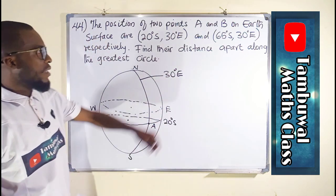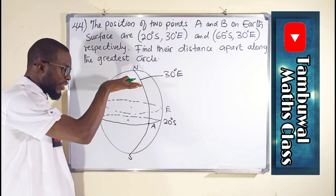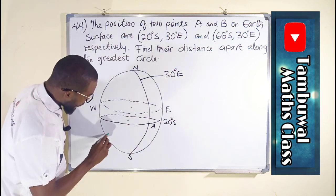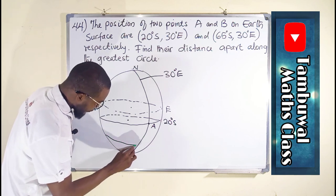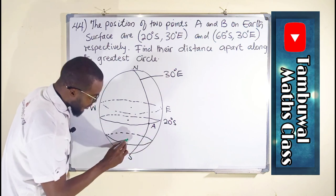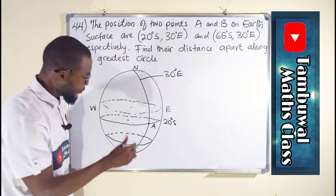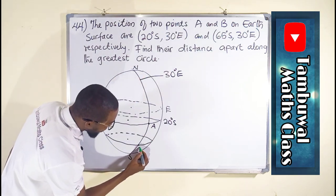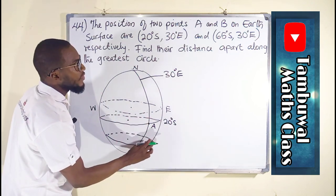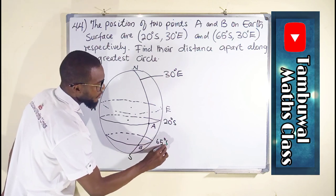Now let us find the other position, which is 65 degrees south. It is going to be a little bit further down compared to the first position — suppose it is somewhere here on the rough sketch. This is the center of the circle. It has the same longitude as the initial position, so the intersection is here. We call this point B, and this latitude is 65 degrees south.